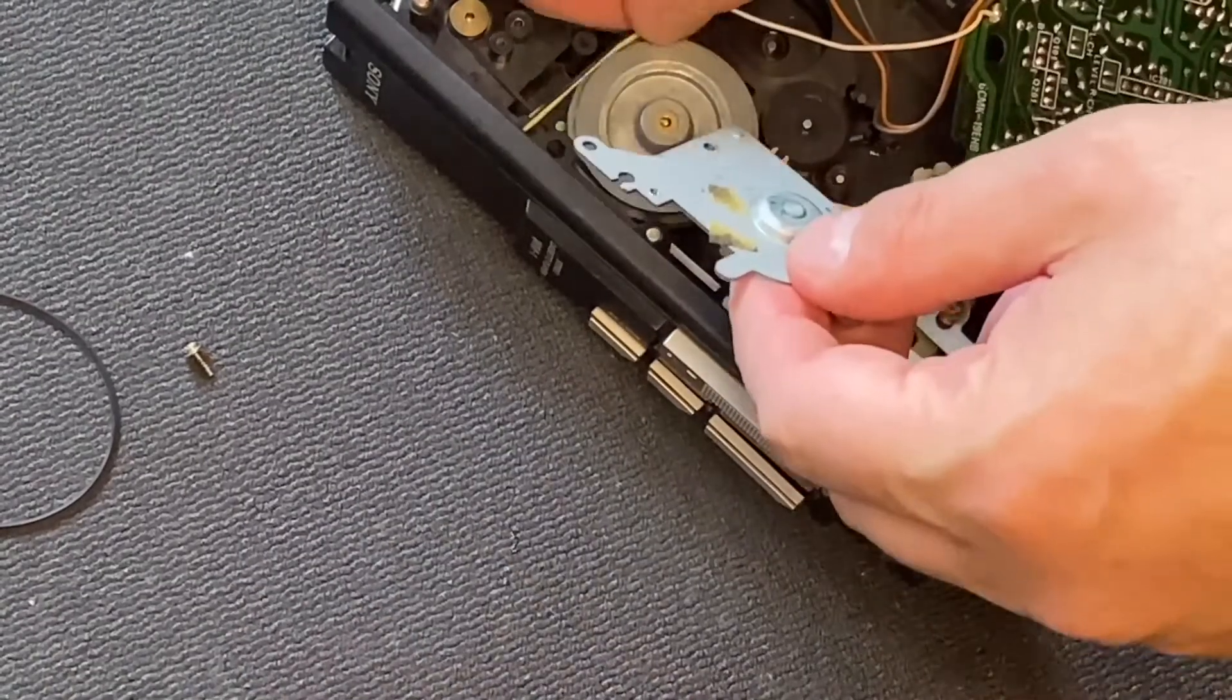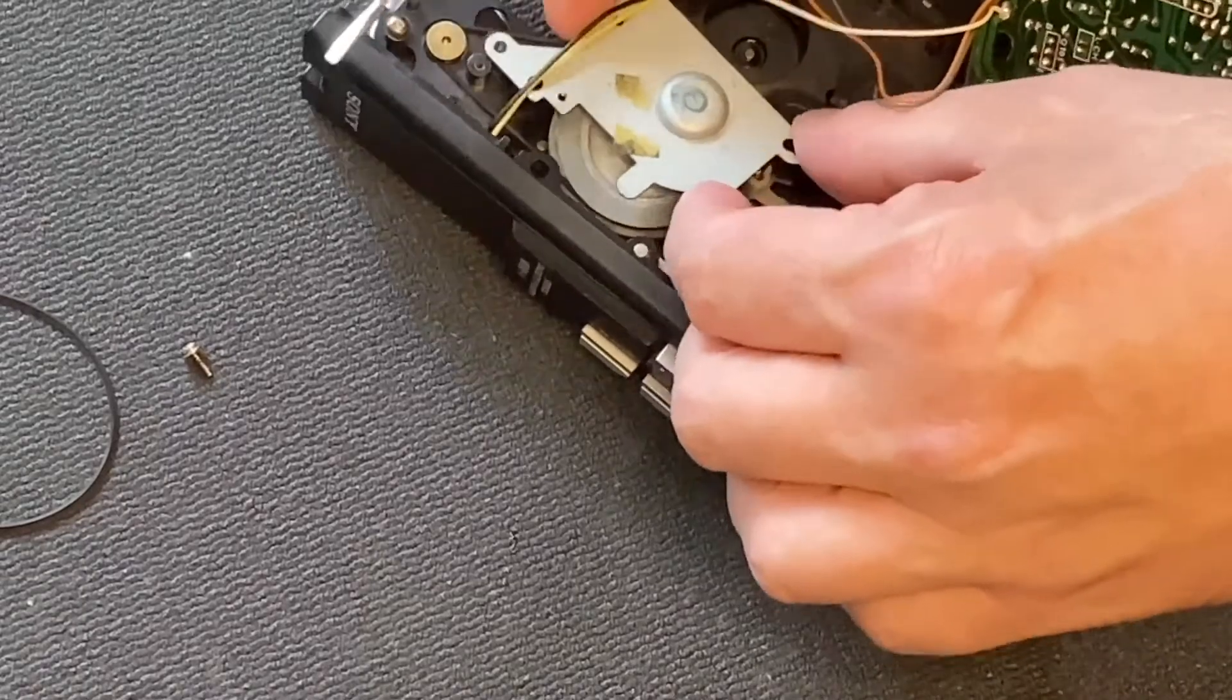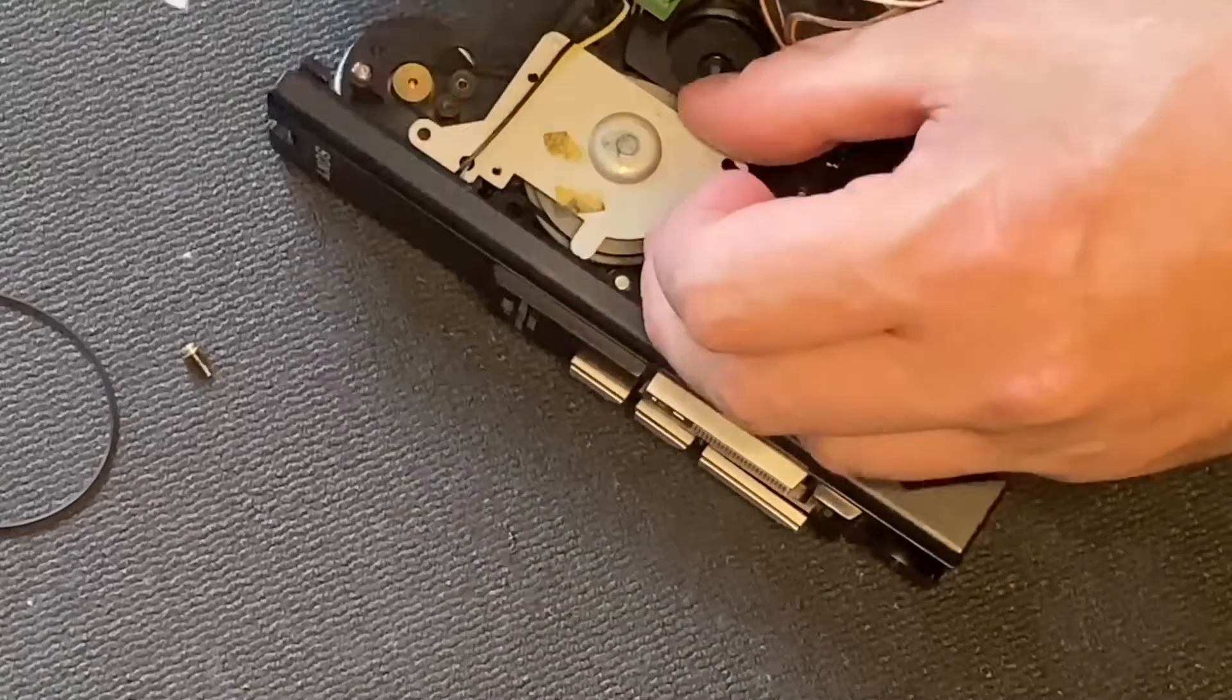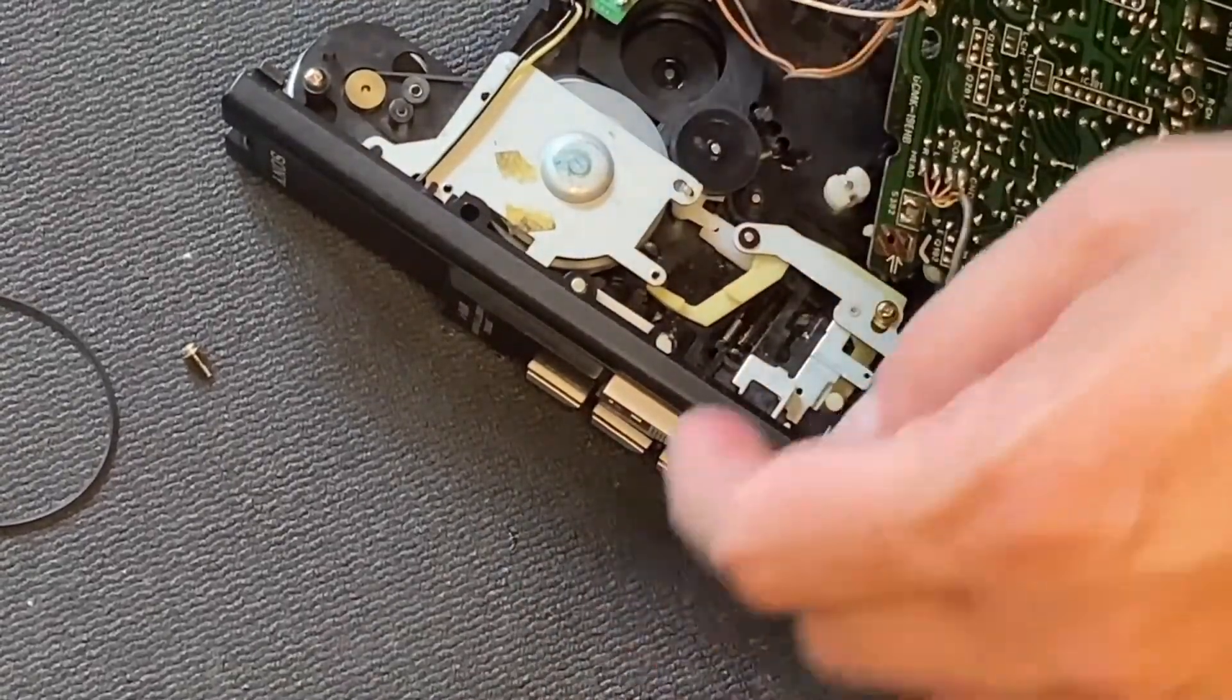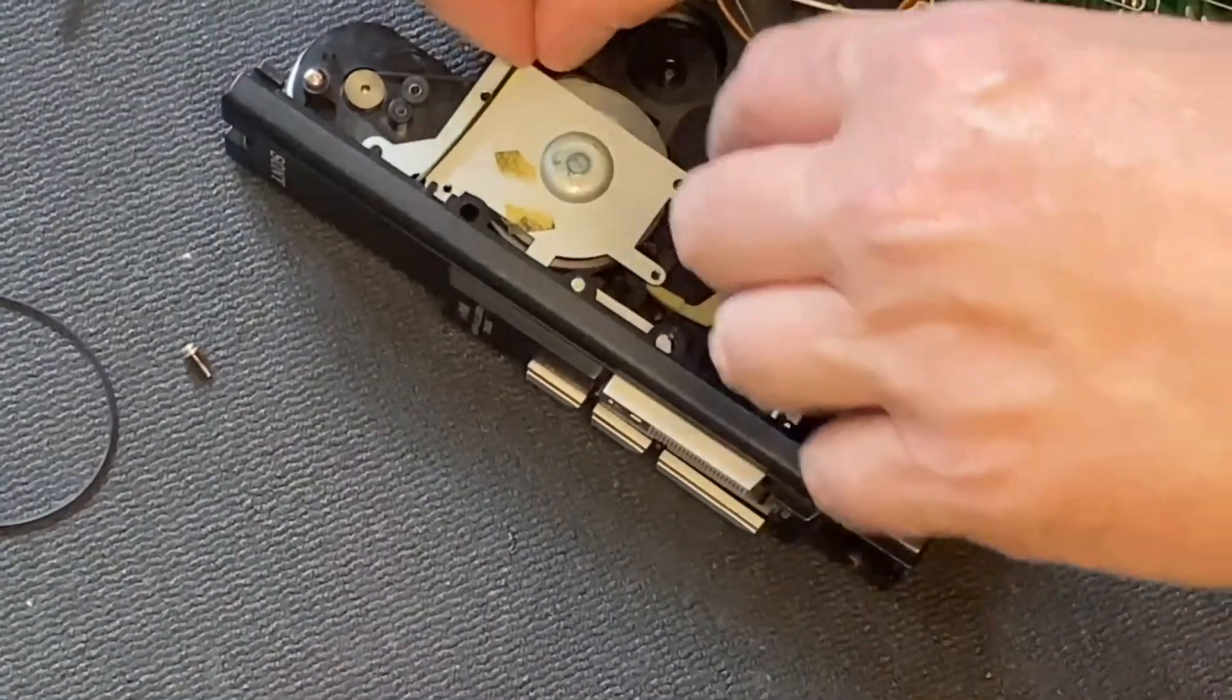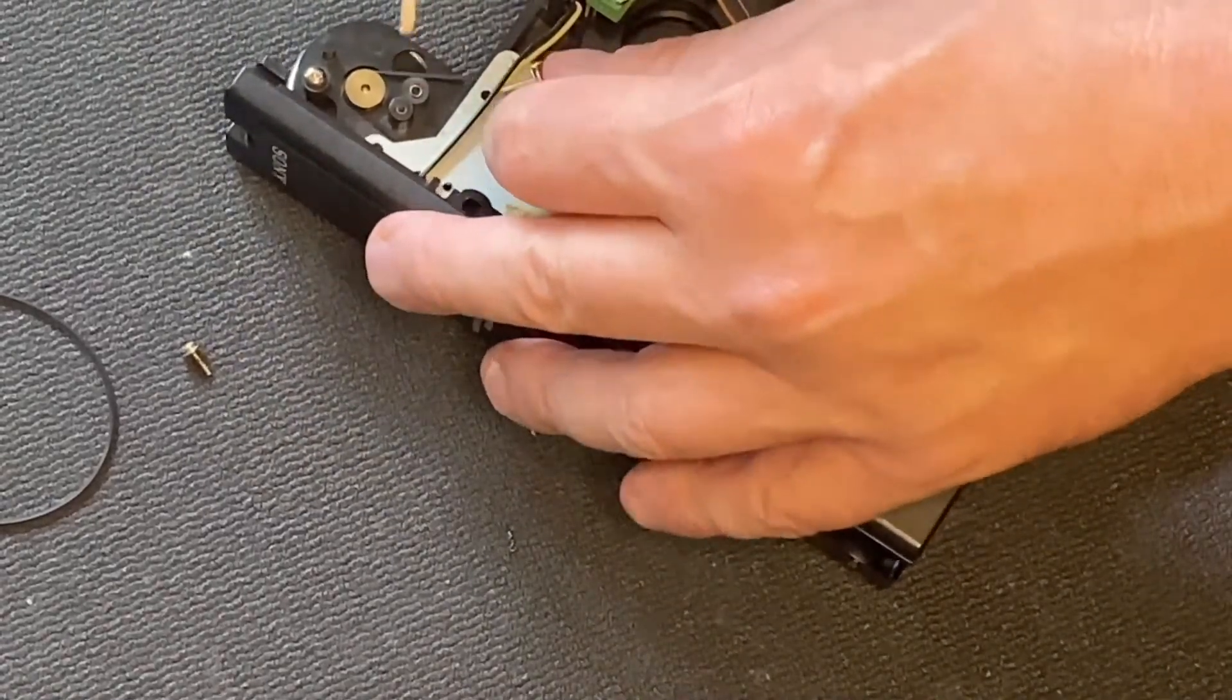Step 12: Continue reassembling. Reinsert the cables into the designated section of the plate—there's a clear indent for this. Put the plate back in place. Reinsert and tighten the screws securing the white cable, followed by the other two screws. Position the screw holder so it doesn't touch the belt.